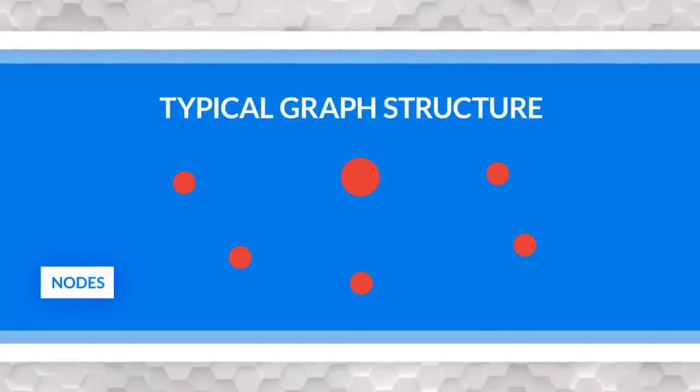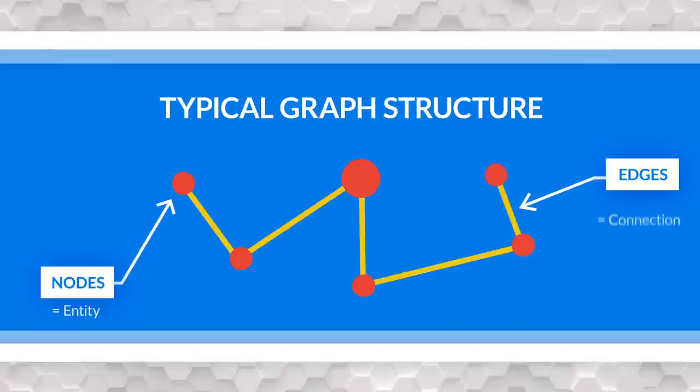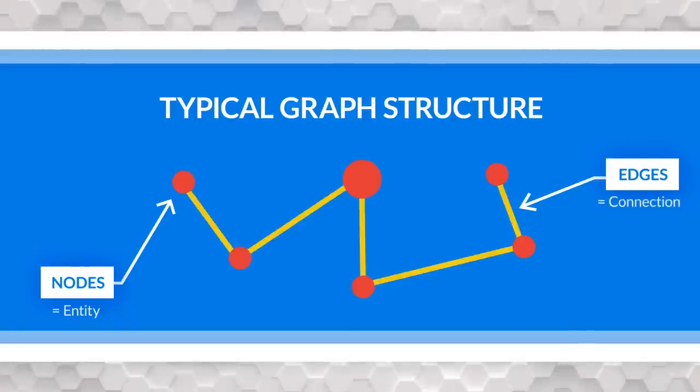This was more about actual graph data and graph networks from a statistical perspective, or visualizing network connections. From an actual graph perspective, typically you have nodes and edges. The nodes represent the entities of the network and the edges represent the connections between those nodes themselves.